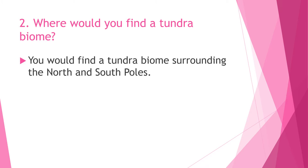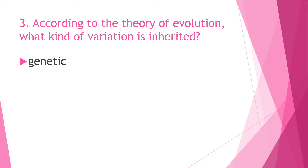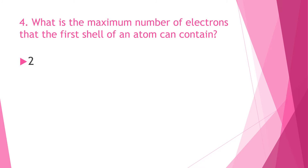Question 3: According to the theory of evolution, what kind of variation is inherited? The answer is genetic variation. Question 4: What is the maximum number of electrons that the first shell of an atom can contain? The answer is two.